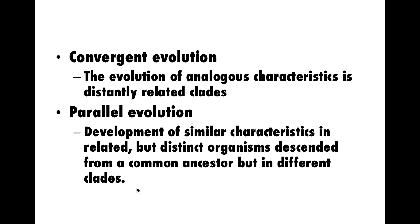Parallel evolution is the development of similar characteristics in related but distinct organisms that are descended from a common ancestor, but in different clades. So parallel evolution is when we see characters evolving not necessarily by shared common ancestry, but characters that tend to be fairly plastic or changeable within a clade — though not all members of that clade may have that particular characteristic.